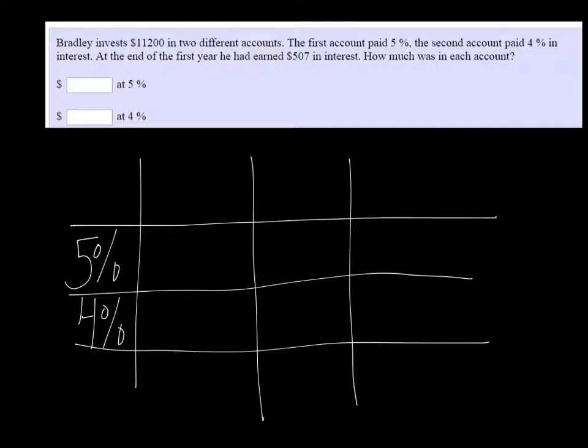So I equals PRT, so I'm going to write it backwards. I'm going to write P times R equals I. And we won't worry about the T because it's just one year. One times anything is just itself.